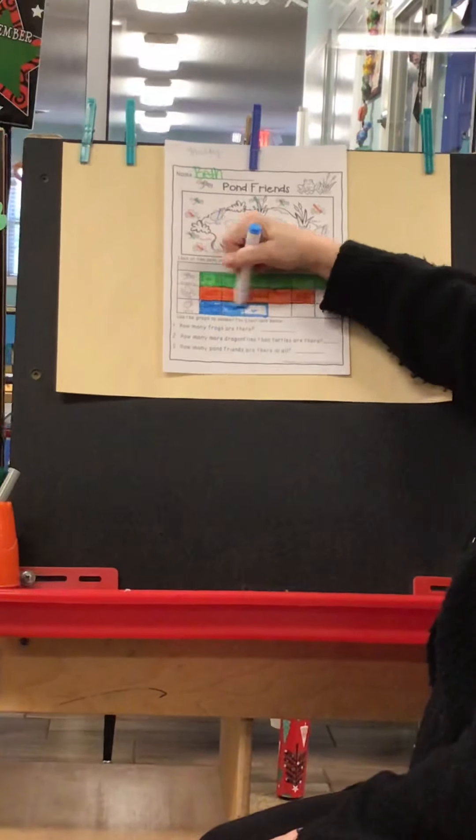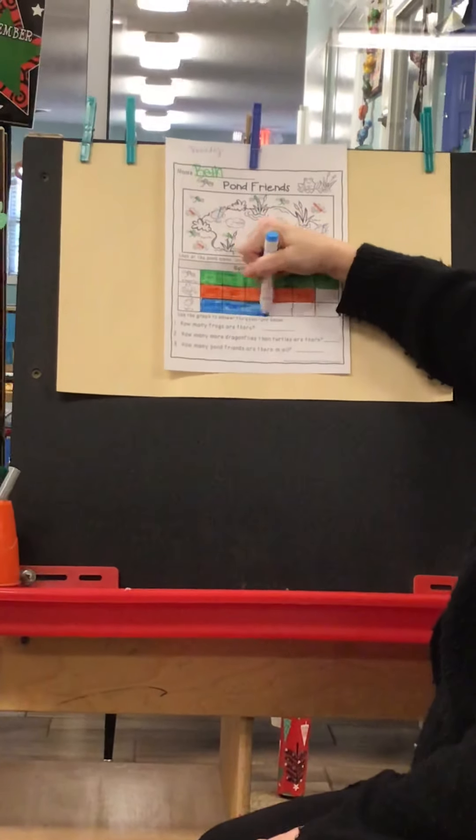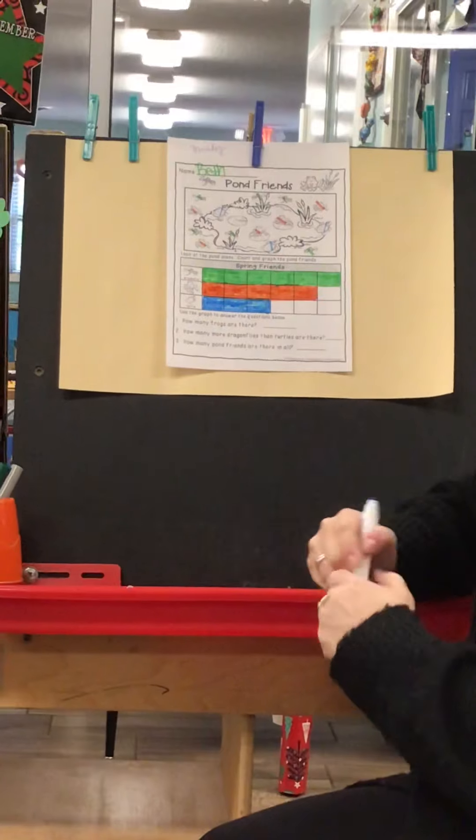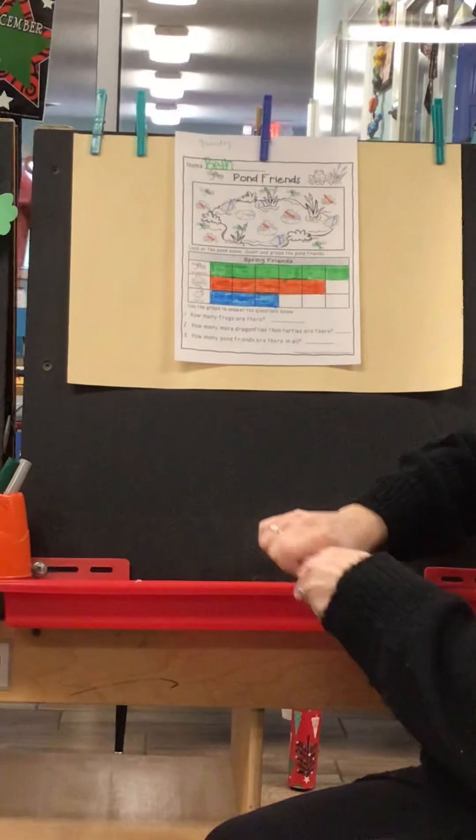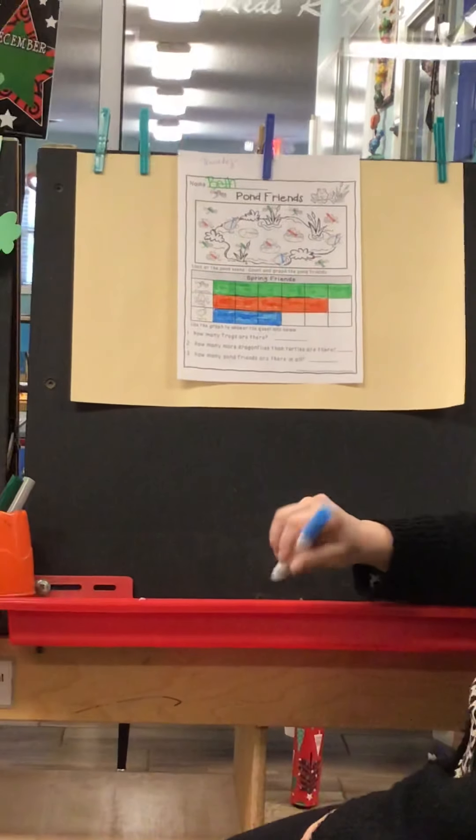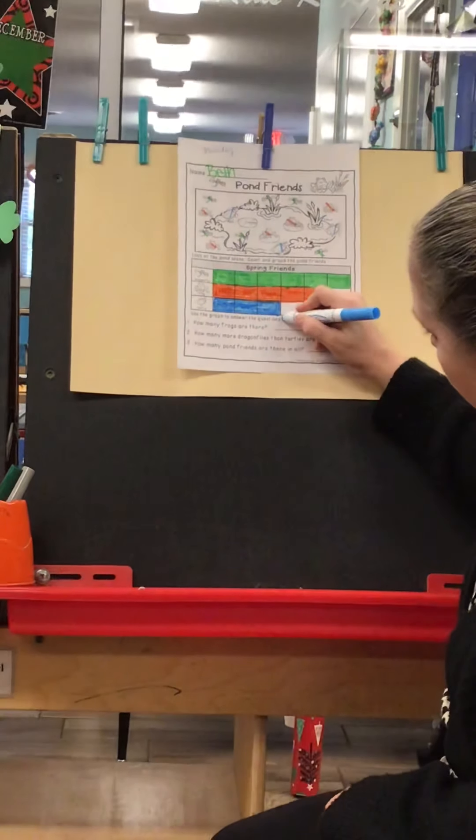Now we're going to answer the questions. First question asks, how many frogs are there? Well, we already counted them, right? So we can use our graph and count. One, two, three, four, five frogs. We're going to write our number five.